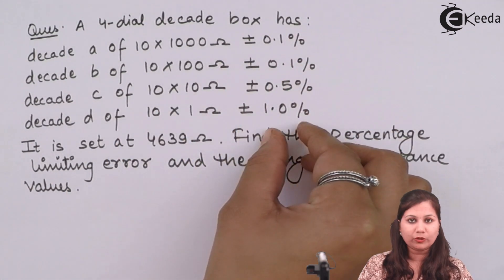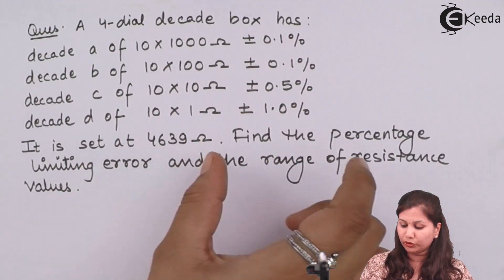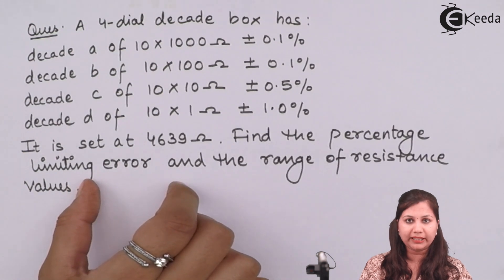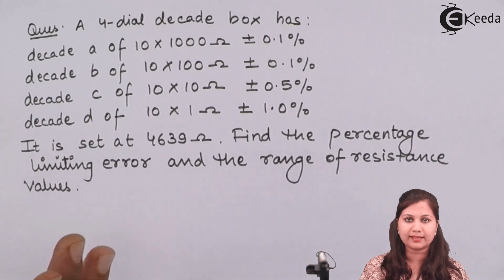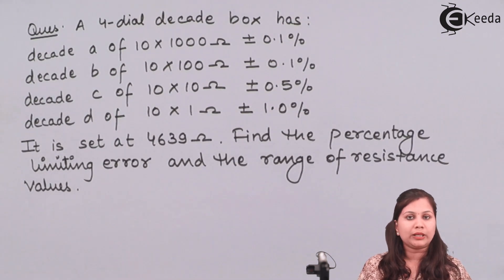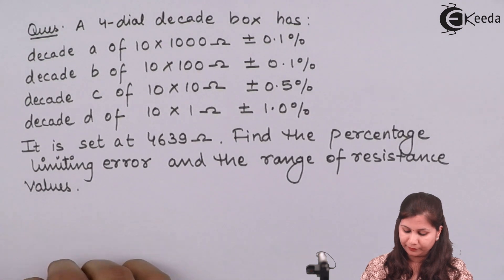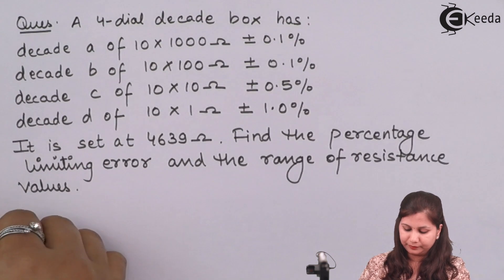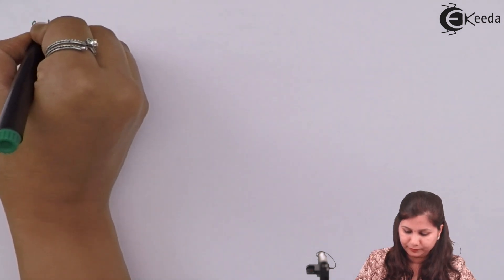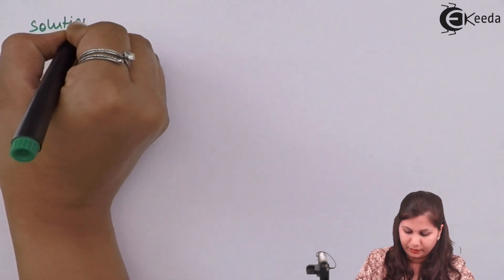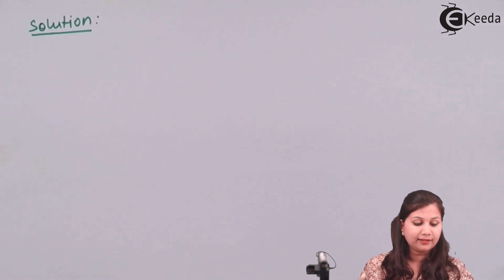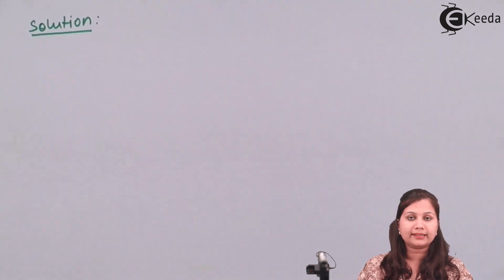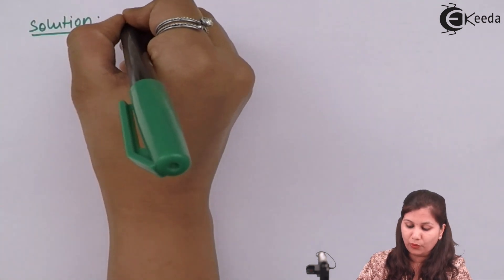The error in each reading is given and we have to find out the total limiting error. We also have to find out what the range of the resistance value will be. The decade box is set at a resistance value of 4639.